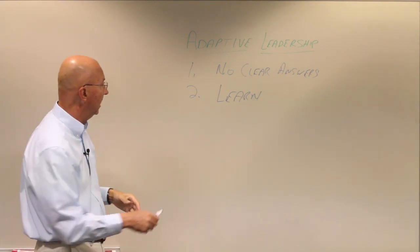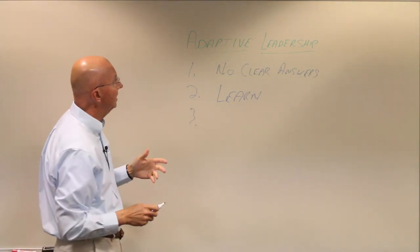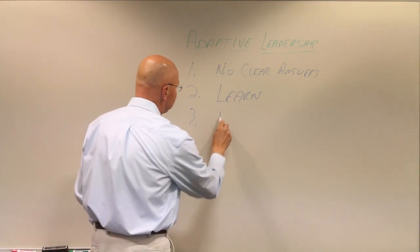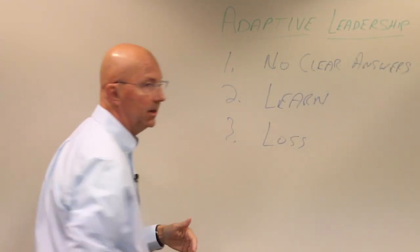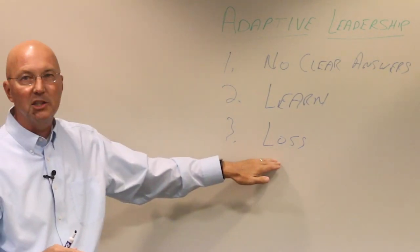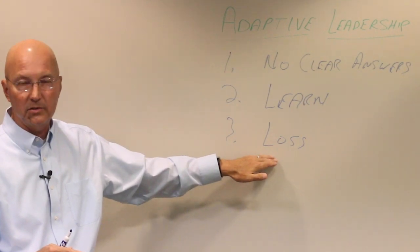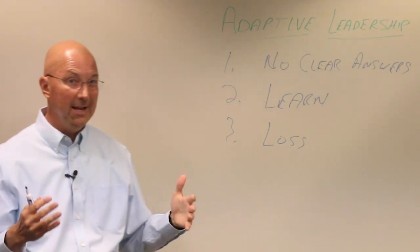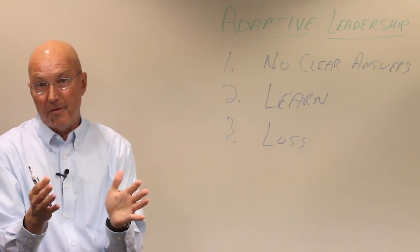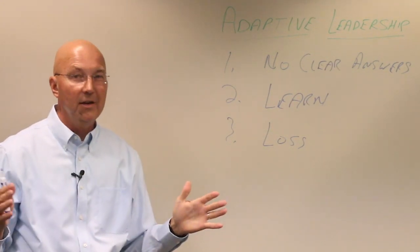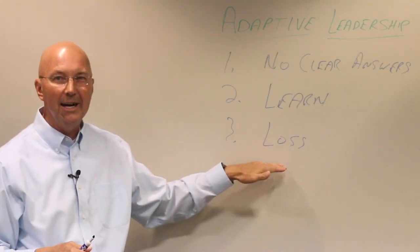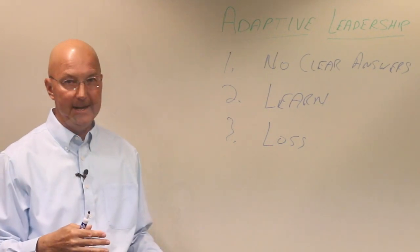We're going to have to grow and learn. And then there's a third aspect to adaptive leadership that Bolsinger speaks of, and that is in every situation as we move toward a solution and an answer, we're going to experience a sense of loss. And that's sobering to me, but an important reminder because I like the thought of adventuring, of being off the map. I like the thought of we're doing things differently, but it's a reminder there's loss involved in that.